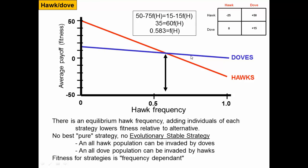We can calculate this equilibrium value. These are two straight lines: the hawk strategy is 50 minus 75 times the frequency of hawks, and the dove strategy is 15 minus 15 times the frequency of hawks. Setting them equal and solving for the frequency of hawks gives 58.3%. So the equilibrium hawk frequency is 58.3%. There is no best pure strategy — it's not always better to be a hawk or always better to be a dove; it depends on the frequency. There is no single evolutionarily stable strategy.